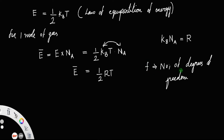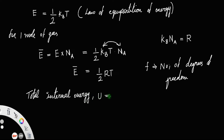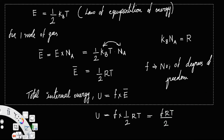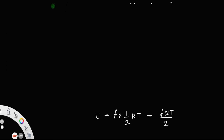Suppose the molecule has f degrees of freedom, then the total internal energy U is equal to f times the energy associated with one mole of gas. So the total internal energy U = f × (1/2) RT, or U = fRT/2.